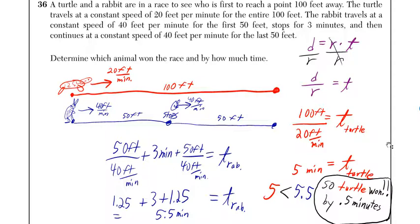Determine which animal won the race and by how much time. I drew a little diagram for us already. We got the turtle going at 20 feet per minute for the entire 100 feet. We got the rabbit, thinking he's all slick, taking a little break for 3 minutes halfway in between, and then finishing up and going on at the same rate.